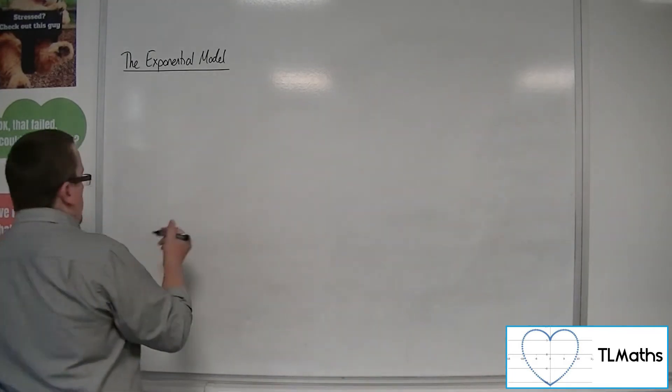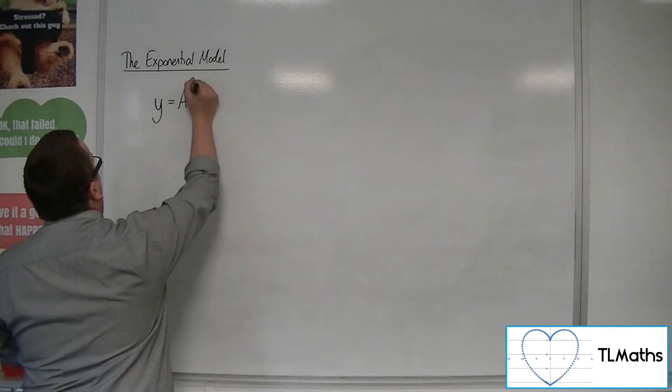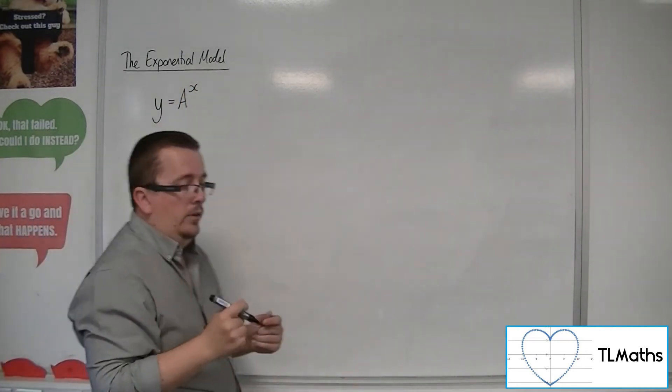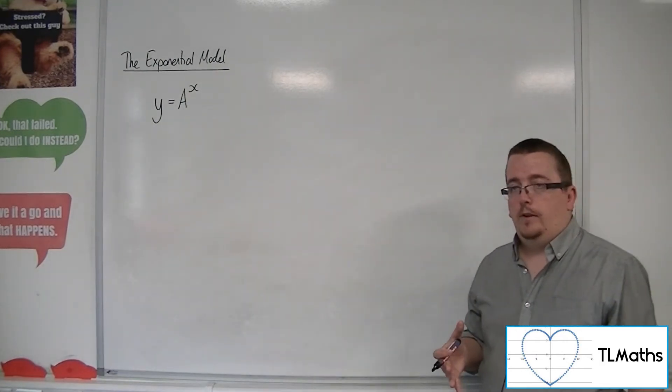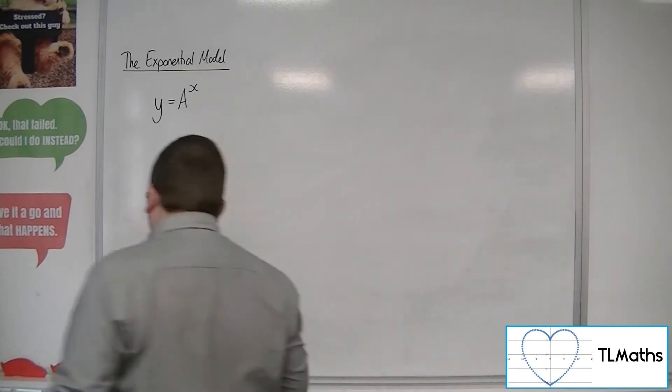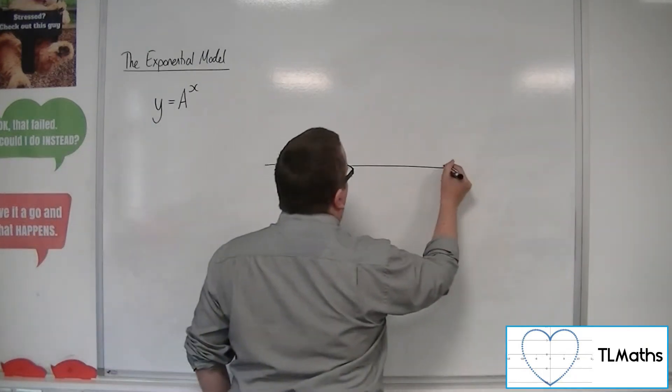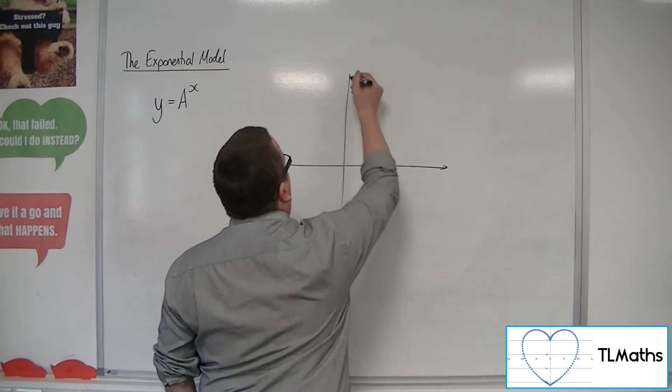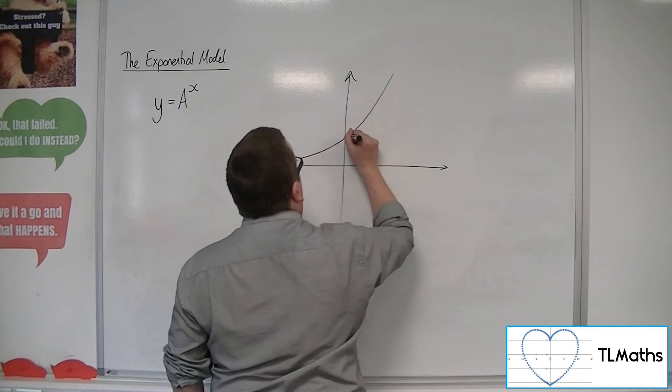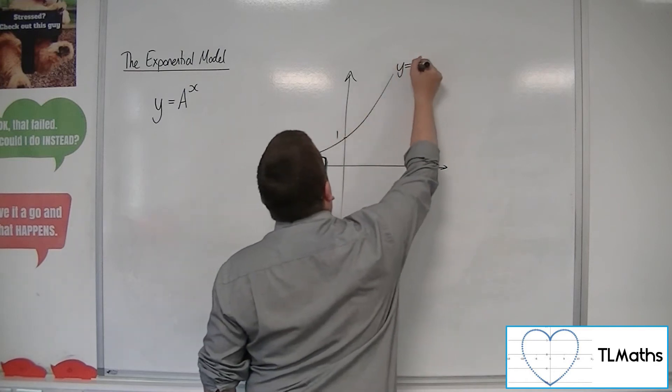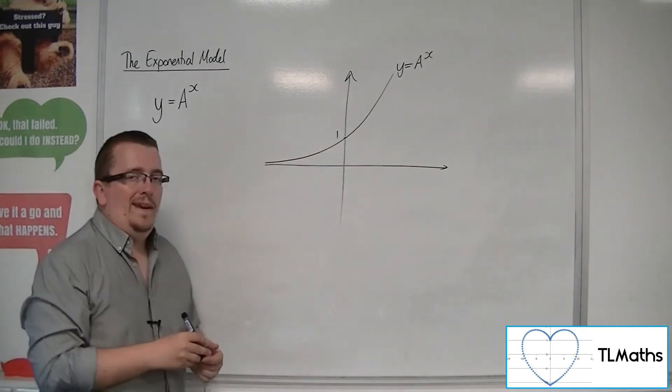So what I want to do is I want to look at this exponential function, y equals a to the x. Now, the key thing here is we would be sketching a function that would look like this. We know that that function goes through 1 when x is 0.